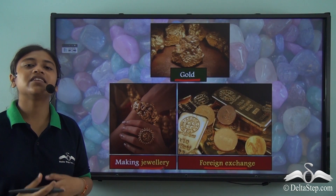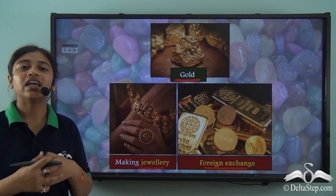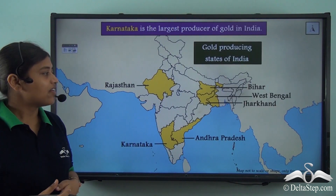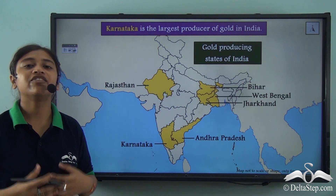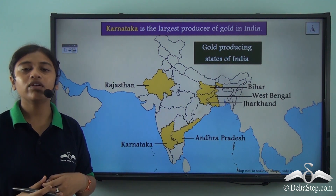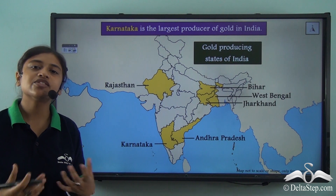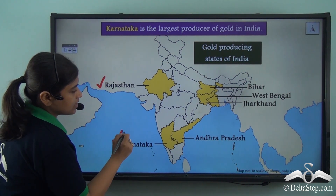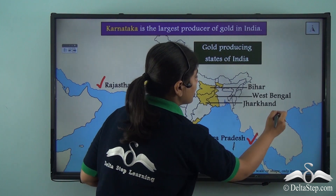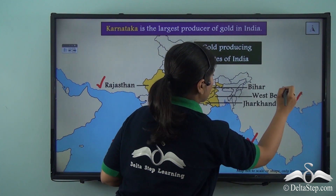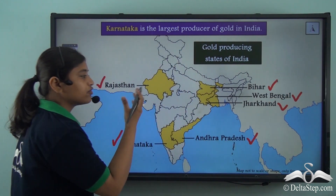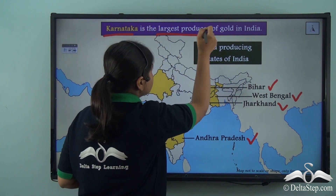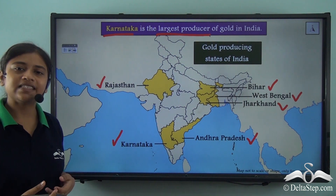Now let us look at the distribution of gold in India and in the world. In India, there are many places with huge deposits of gold that are also leading producers. These are Rajasthan, Karnataka, Andhra Pradesh, Jharkhand, West Bengal and Bihar. Out of all these states, Karnataka is the largest producer of gold in India.